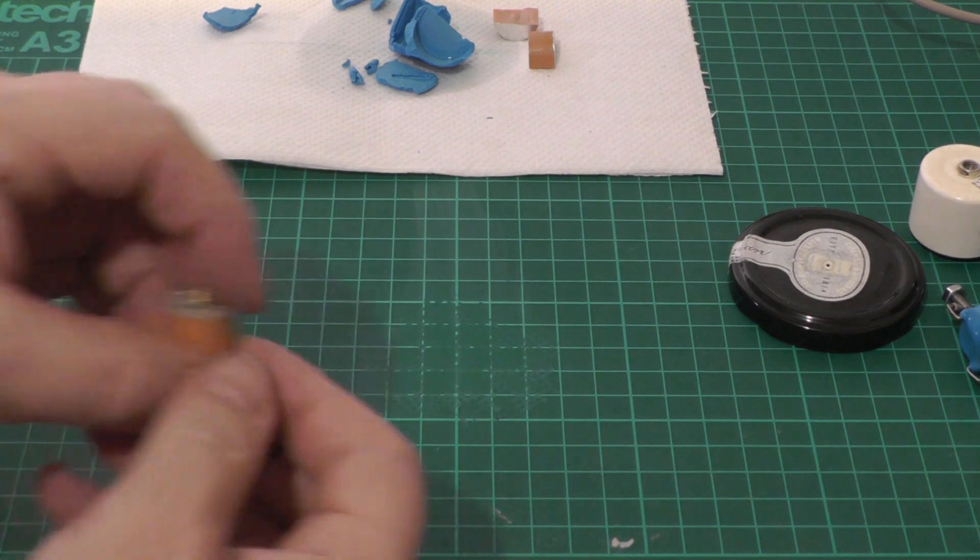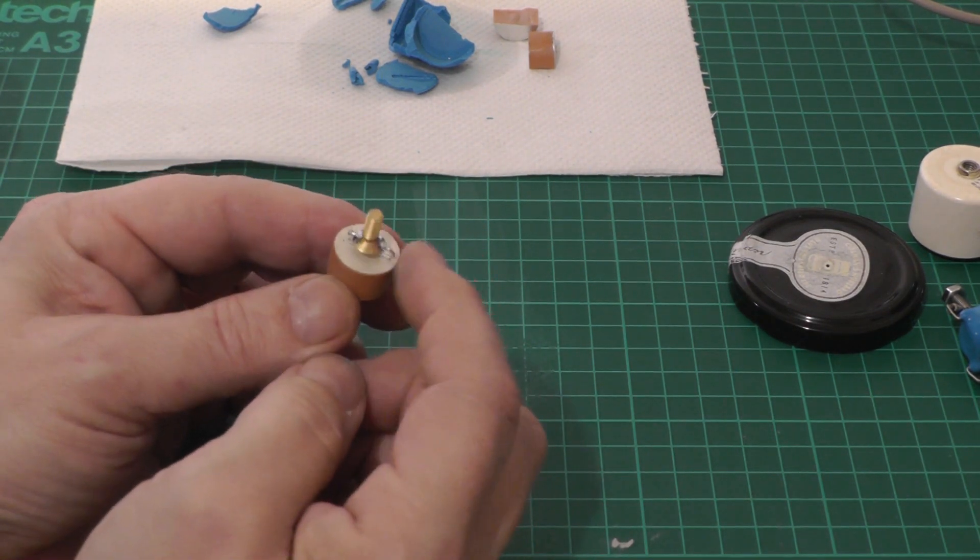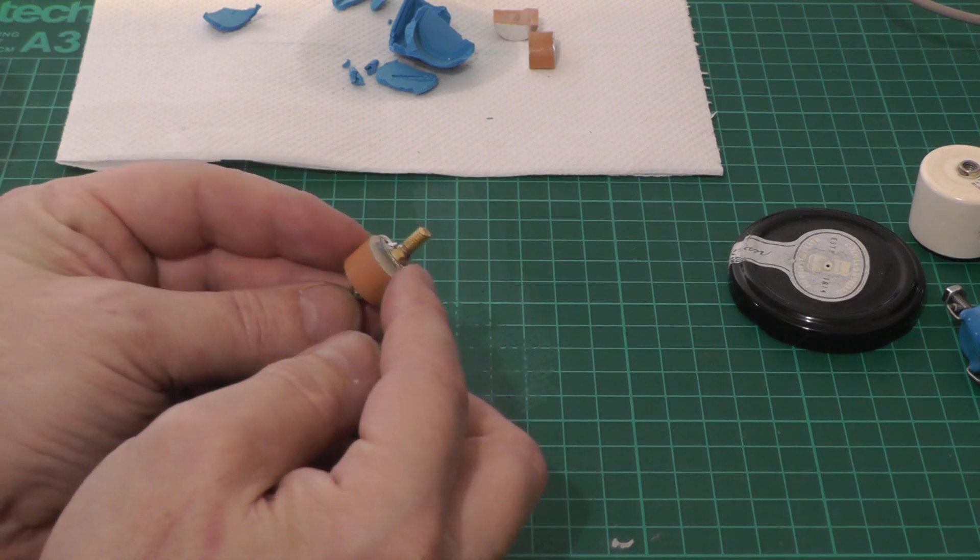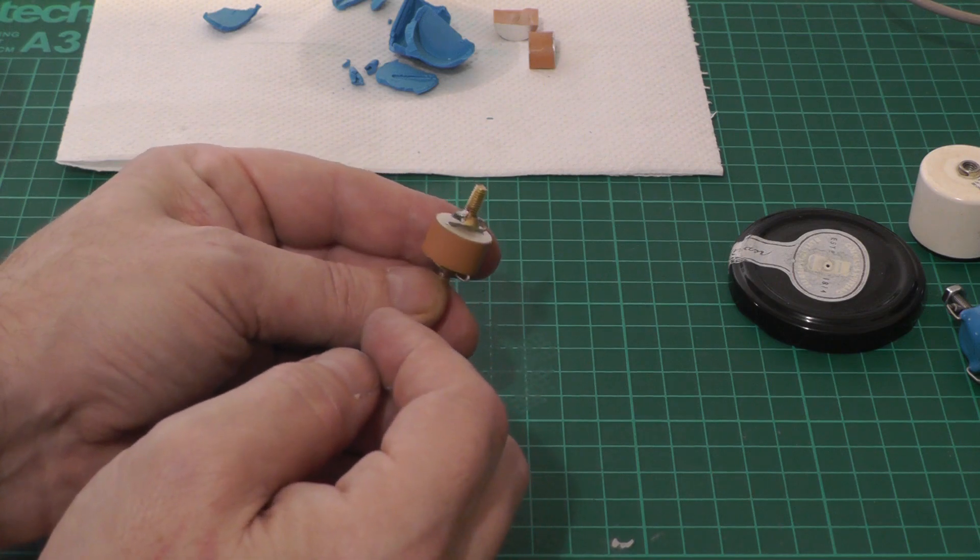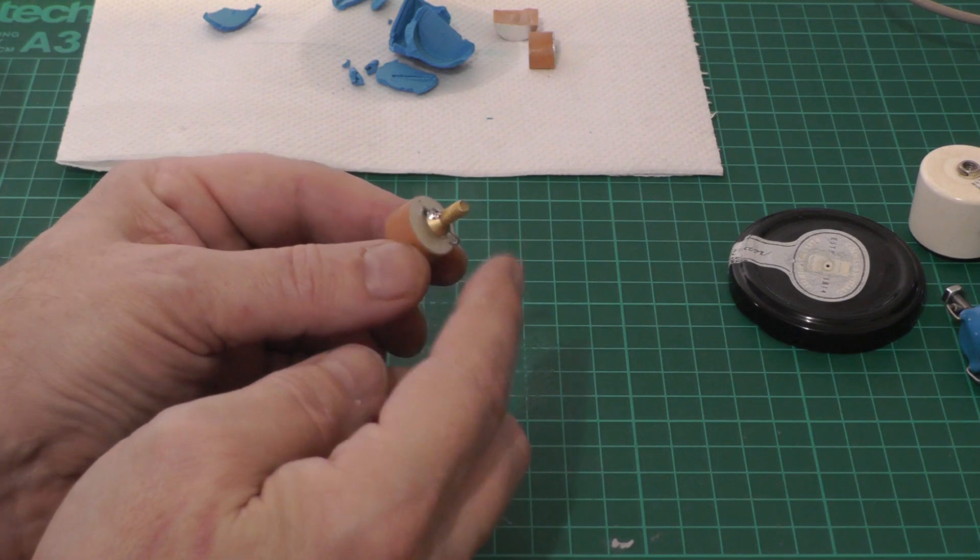I've soldered on two brass screws to this. What I've done is I've just bent the leads over right where they meet the silver plating and soldered on some brass machine screws so that we've got some mechanical point to bolt it to things with.